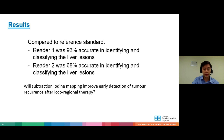Comparing to the reference standard, we found that the reader with the iodine map was 93% accurate in identifying and classifying liver lesions, while Reader 2 was 68% accurate. The question of whether subtraction iodine mapping improves early detection of tumour recurrence after local regional therapy seems to be answered — we think this technique will actually help us detect earlier tumours.